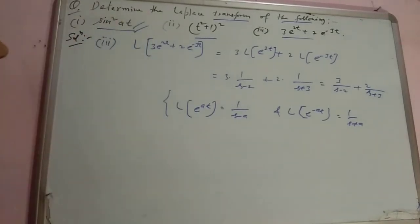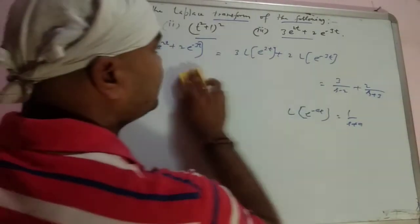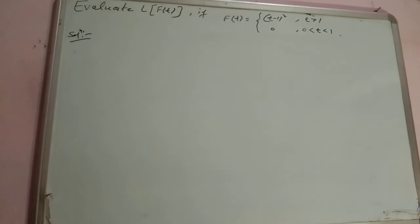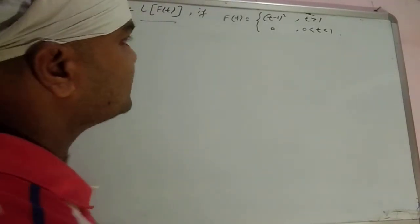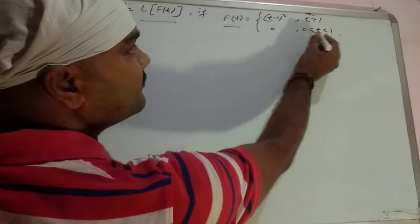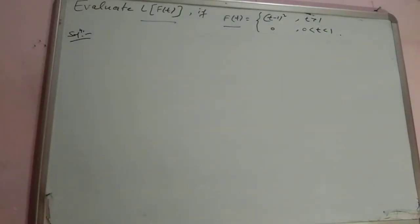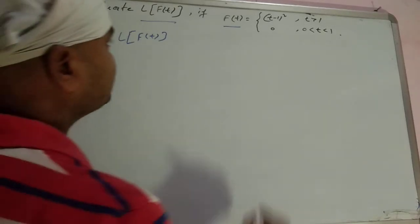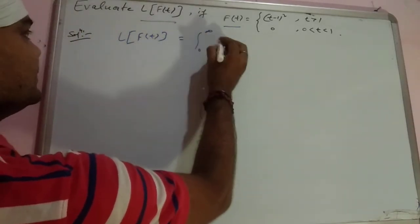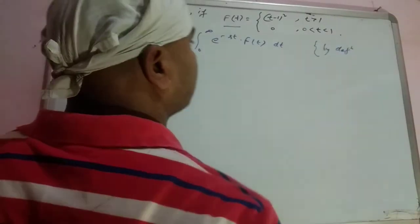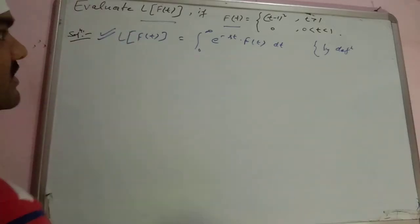Now let's move to a slightly tougher question. Evaluate the Laplace of f(t), where f(t) equals (t minus 1) whole square when t is greater than 1, and equals 0 when 0 less than t less than 1. By the basic definition, Laplace of f(t) equals integral from 0 to infinity of e to the power minus st times f(t) dt.